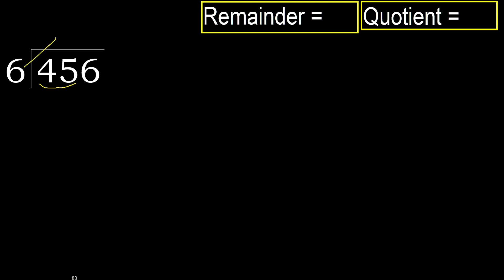6 multiplied by which number is nearest to 45 but not greater? 6 multiply by 8 is 48, which is greater. Multiply by 7: 42 is not greater. Subtract: 45 minus 42 equals 3.